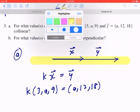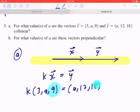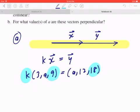You can break this into components, but if you look at this last component, the only way 9 becomes 18 is by multiplying by 2. So you can write down the fact that k equals 2.